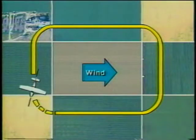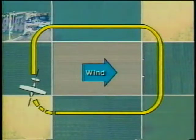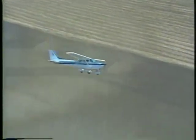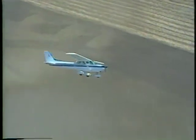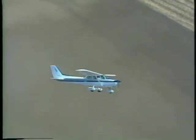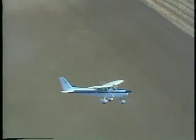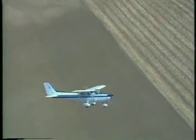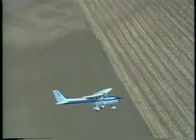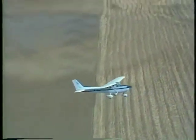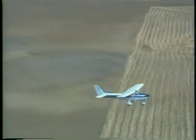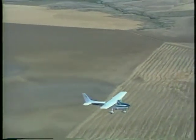Maintain this crab angle until you reach the end of the crosswind leg. As you turn downwind, your ground speed increases, meaning the bank angle needs to increase gradually throughout the turn to maintain a constant distance. Your ability to compensate for the wind during a turn is an important element of flying a rectangular course properly.